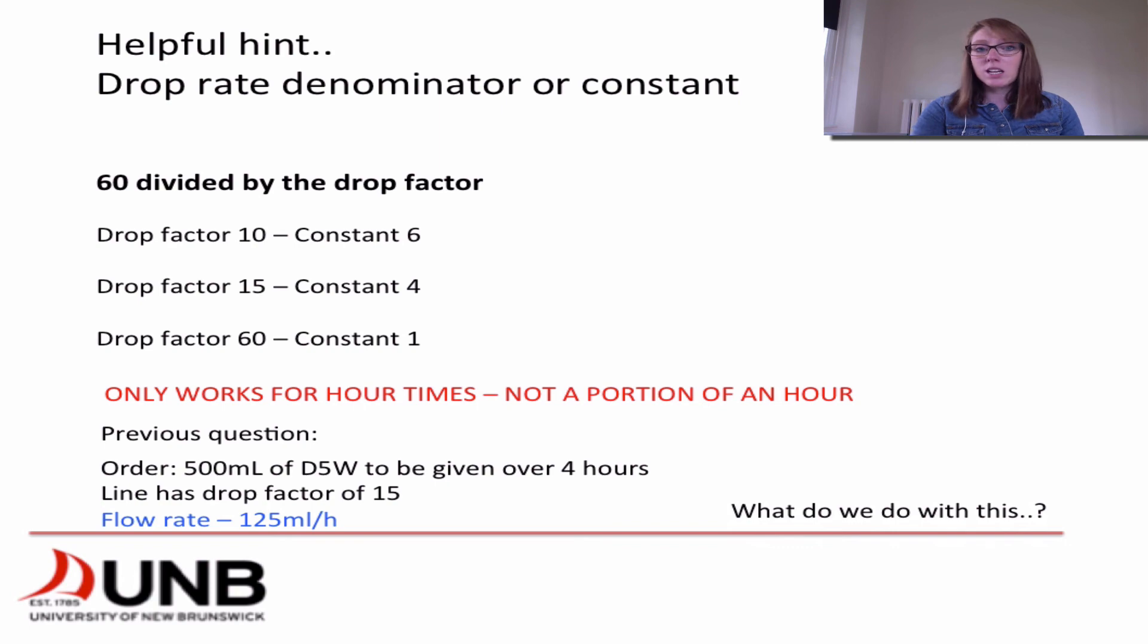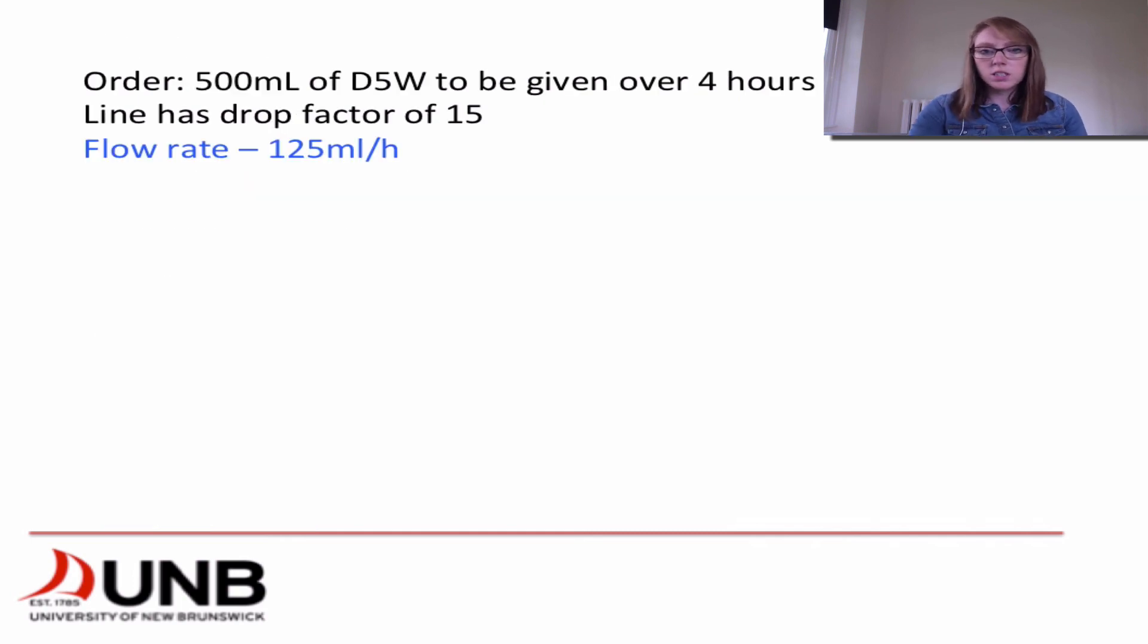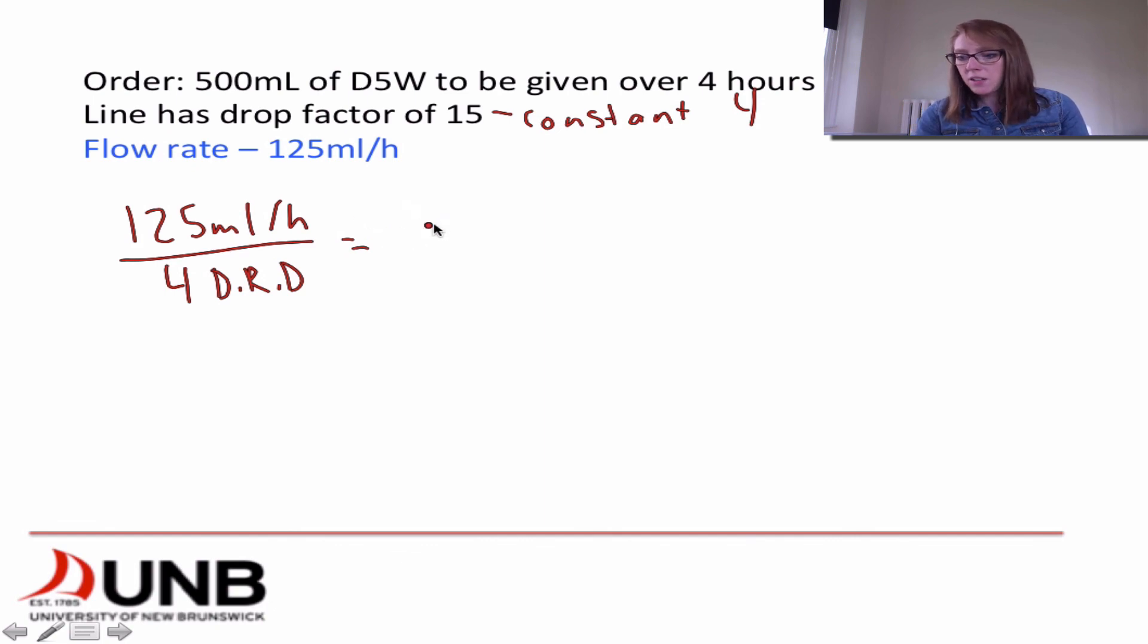So what do we do with this? What does that even mean? Well, we can see that our line has a drop factor of 15, which means that our constant is 4. So let's move on. So we have a constant of 4. So all we have to do is take our 125 mLs per hour, and we're going to divide it by 4. And you can abbreviate this as a drop rate denominator, DRD. And if you do this math, it's going to work out to 31.25, which we know drops per min, which we know that we don't leave as this. We round. So it's going to be 31 drops per min.